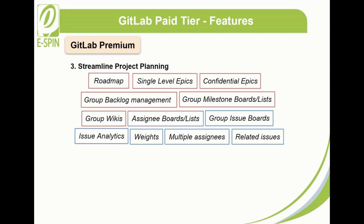Assignee boards/lists streamline assignment of work to team members in a graphical assignment board. Group issue boards visually manage programs and groups with multiple issue boards where work can be dynamically assigned and tracked. Issue analytics establishes consistent and standard practices. Weights help prioritize and move forward what moves the needle. Multiple assignees enable different profiles in your team to work on the same place concurrently. Related issues allow browsing connected issues across groups and projects, offering a bird's-eye view of all progress in the same direction.